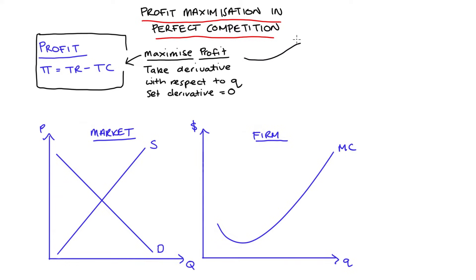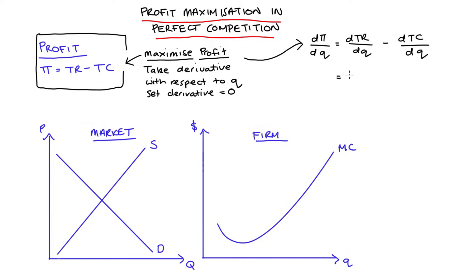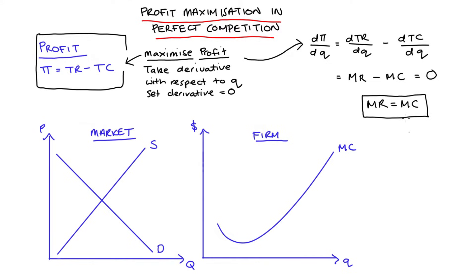On the right hand side of the screen, let's take the derivative of our profit with respect to quantity. That's equal to the derivative of each of its component parts: the derivative of total revenue with respect to quantity minus the derivative of total cost with respect to quantity. The derivative of total revenue with respect to quantity is marginal revenue MR, and the derivative of total cost with respect to quantity is marginal cost MC. Setting that equal to zero and rearranging, we get the condition that if the firm wants to maximize profit, it sets quantity such that marginal revenue equals marginal cost. That's the general condition of profit maximization.